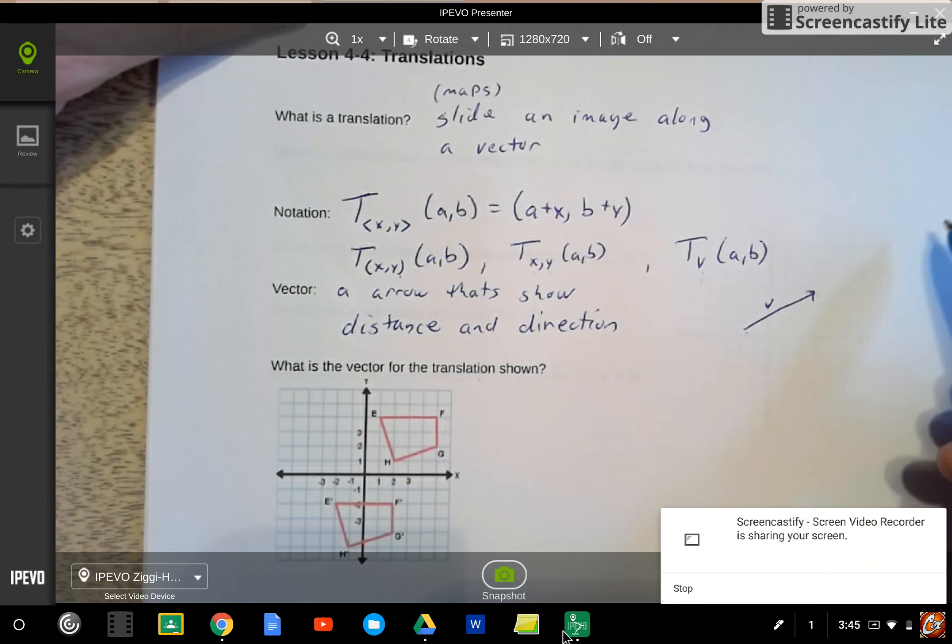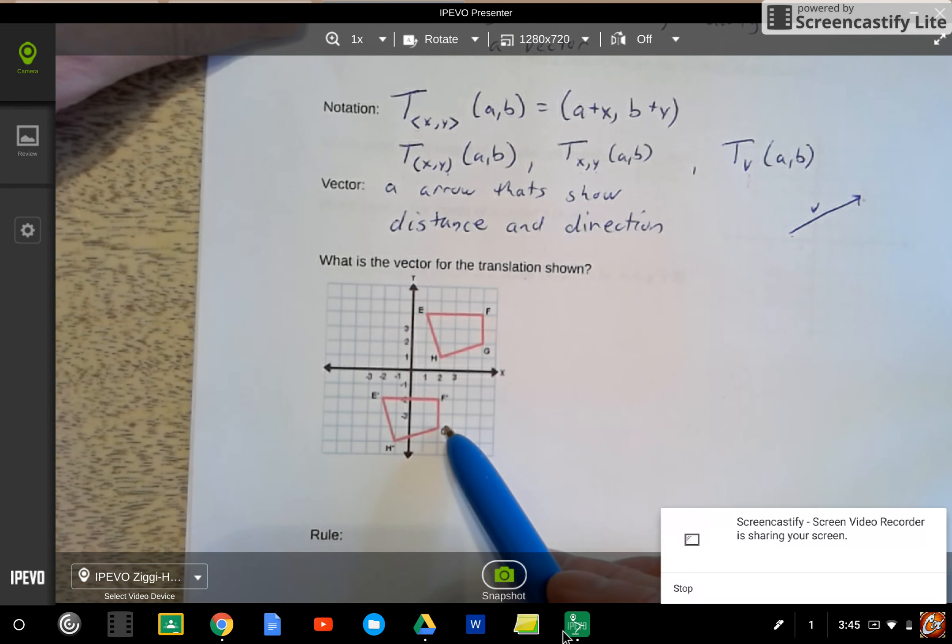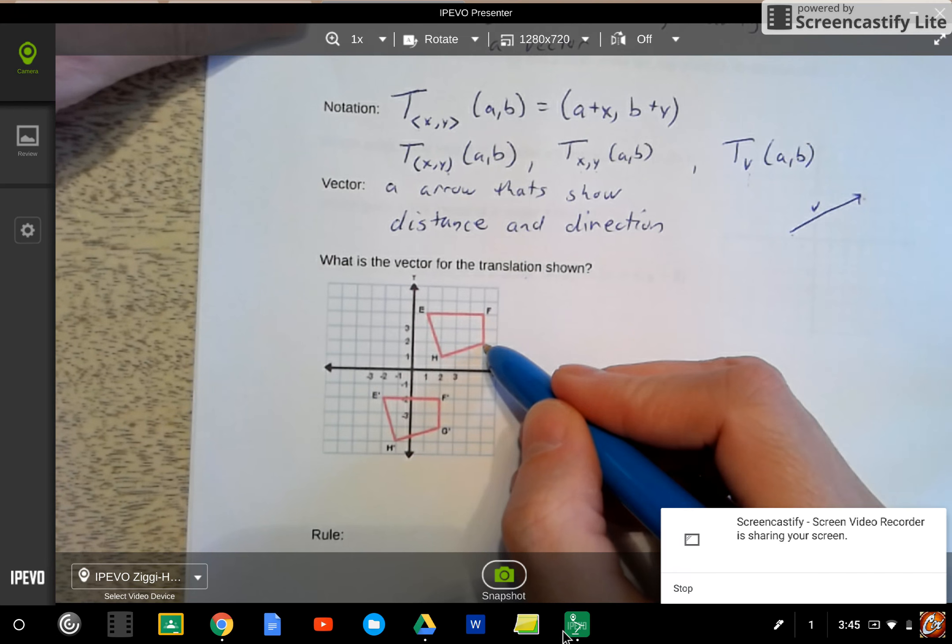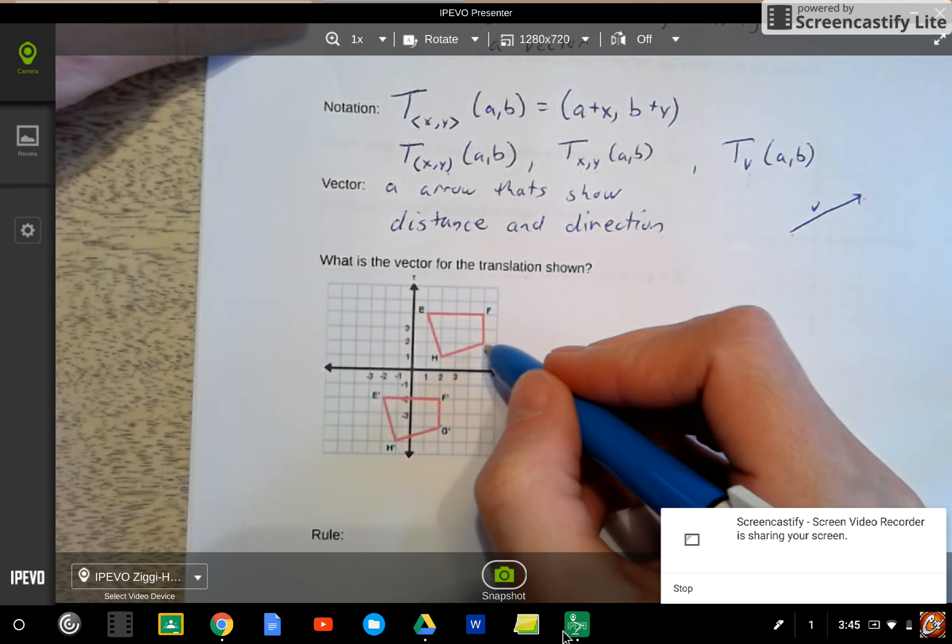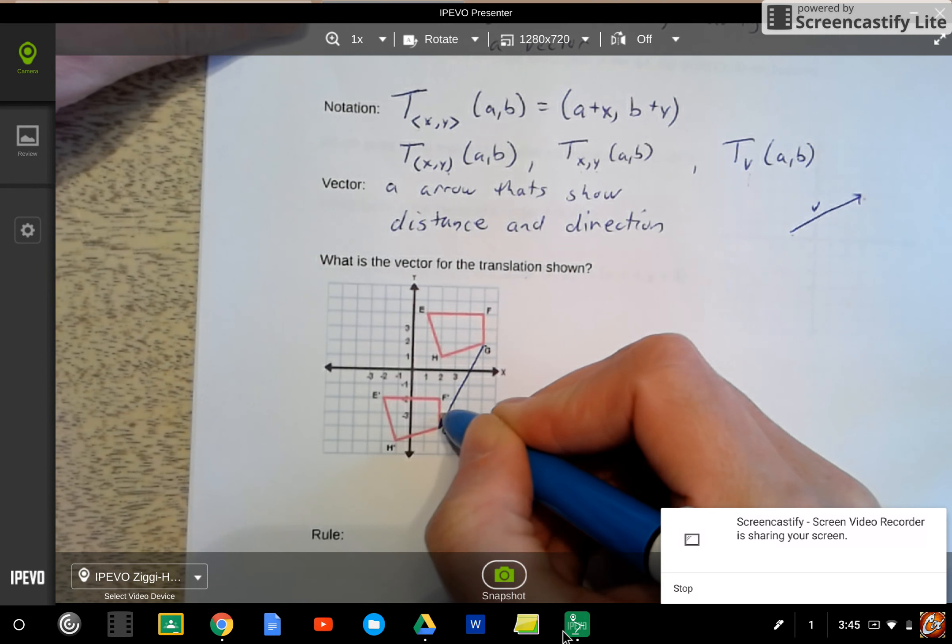So if we look at this first question, it's saying, hey, what is the vector of this translation? Well, the vector is going to go from the pre-image to the image. So I could actually draw that arrow in, and that's the vector.